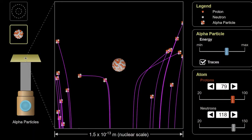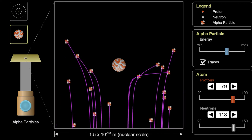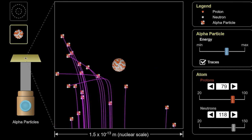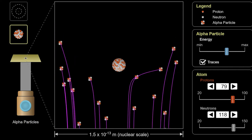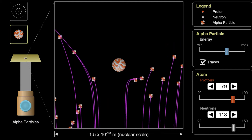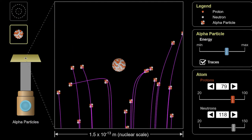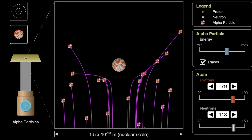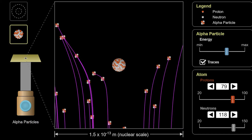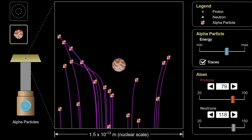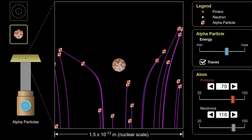What Marsden saw was that some of the alpha particles, instead of just being slightly scattered as they passed through the foil, actually bounced back towards the source. Rutherford said he would not have been more surprised if he had fired a cannonball at a sheet of tissue paper and it had bounced back and hit him. The only way to explain these results was that almost all the mass of the atom was concentrated in a tiny nucleus at the center, and the heavy fast-moving alpha particles would occasionally bounce off that heavy nucleus — what is now called Rutherford scattering.